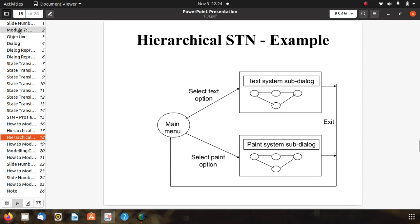Here you can see, here is the main menu. Then select text option, so text system sub-dialogue, then exit. Then another select paint option, so paint system sub-dialogue, then exit. And then from exit to again main menu.